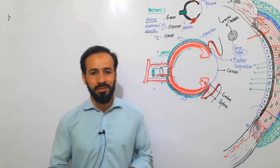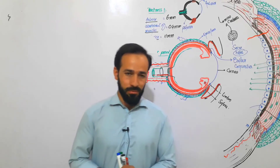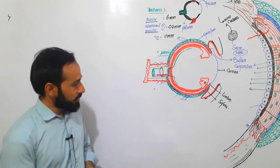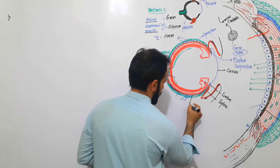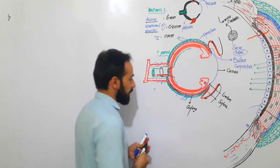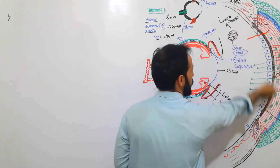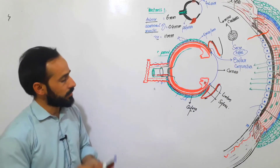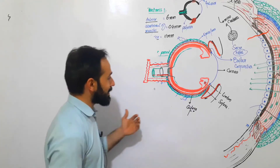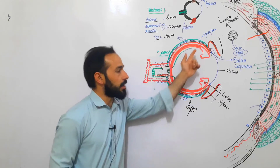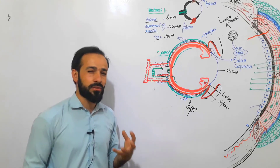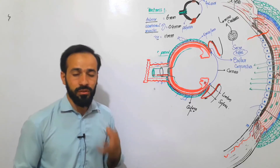Hello, dear friends and students, assalamu alaikum and welcome back. As you know, we are discussing about the structure of the human eye. In the previous lecture I recorded about the sclera — its structure and functions. Before that we covered the structure of cornea. Now we are going to discuss about the second layer, the middle layer of the eye — that is the vascular layer, also called the nutritive layer, the choroidal layer, or the uveal tract.